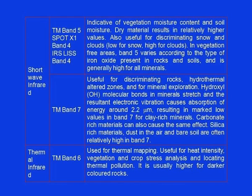In the thermal infrared, TM Band 6 can be used for thermal mapping, heat intensity analysis, vegetation and crop stress analysis, and locating thermal pollution. It is usually higher for colored rocks. We now come to the next era of sensors — those having high spatial resolution but possibly lower spectral resolution.